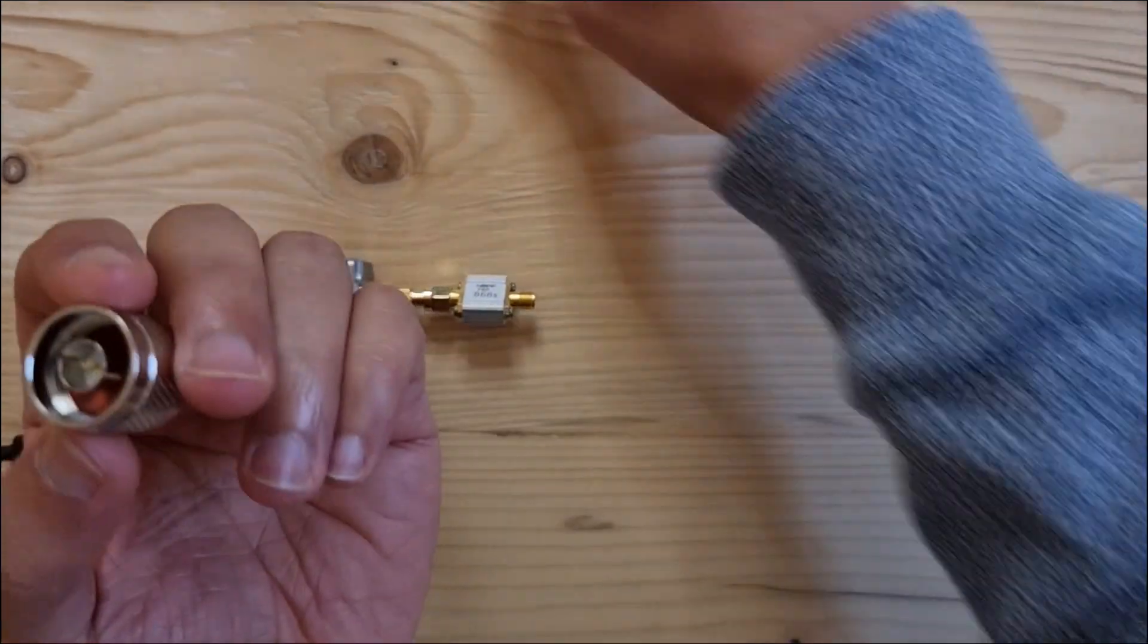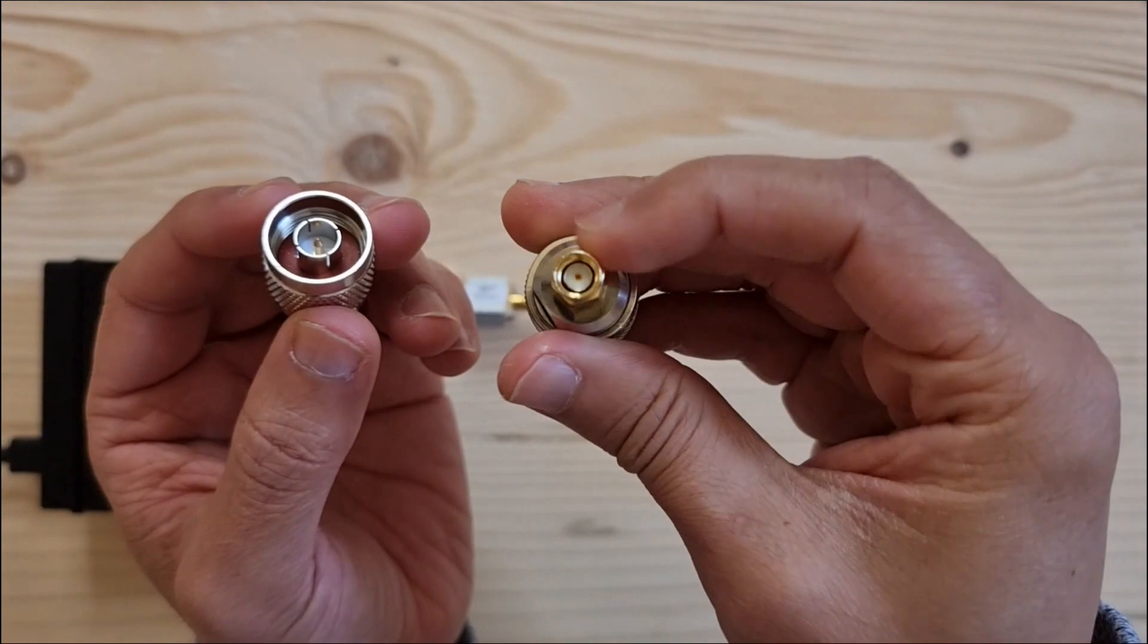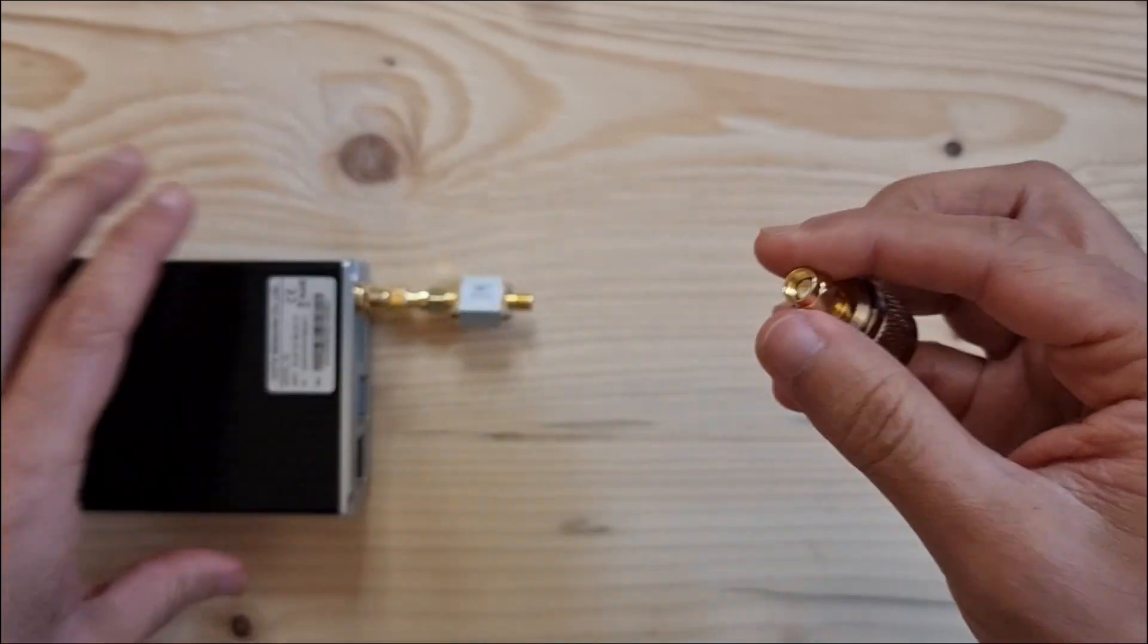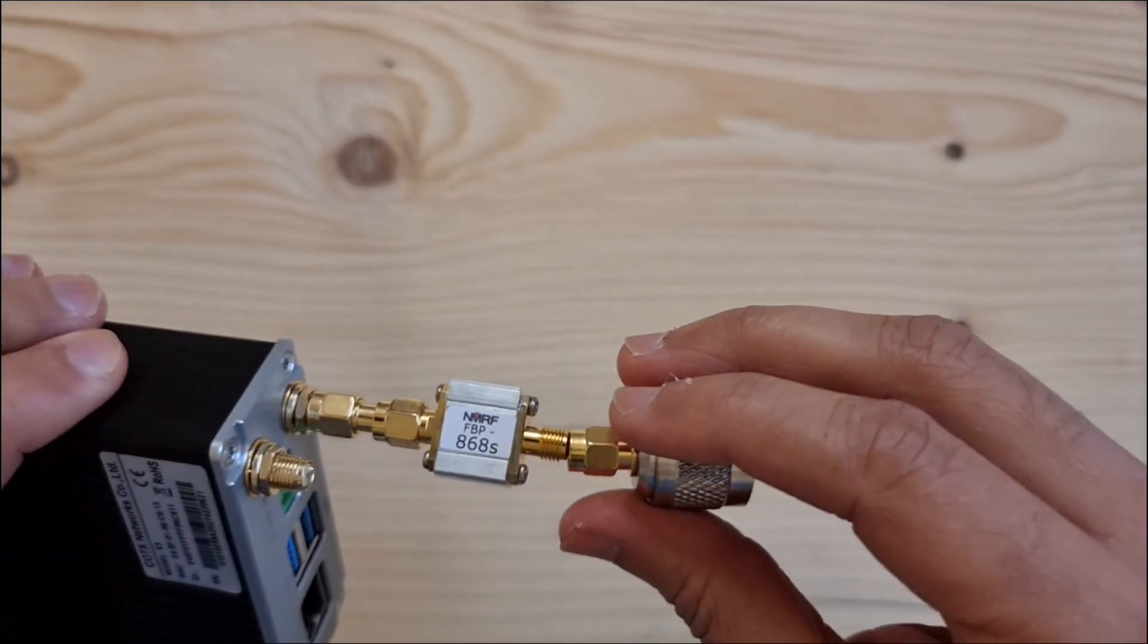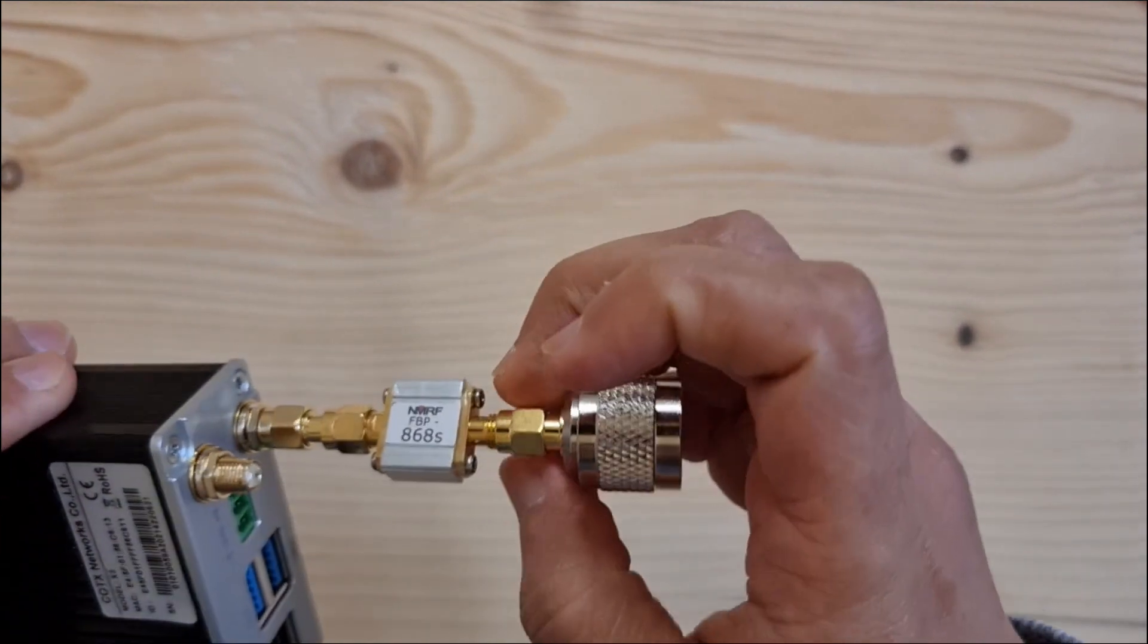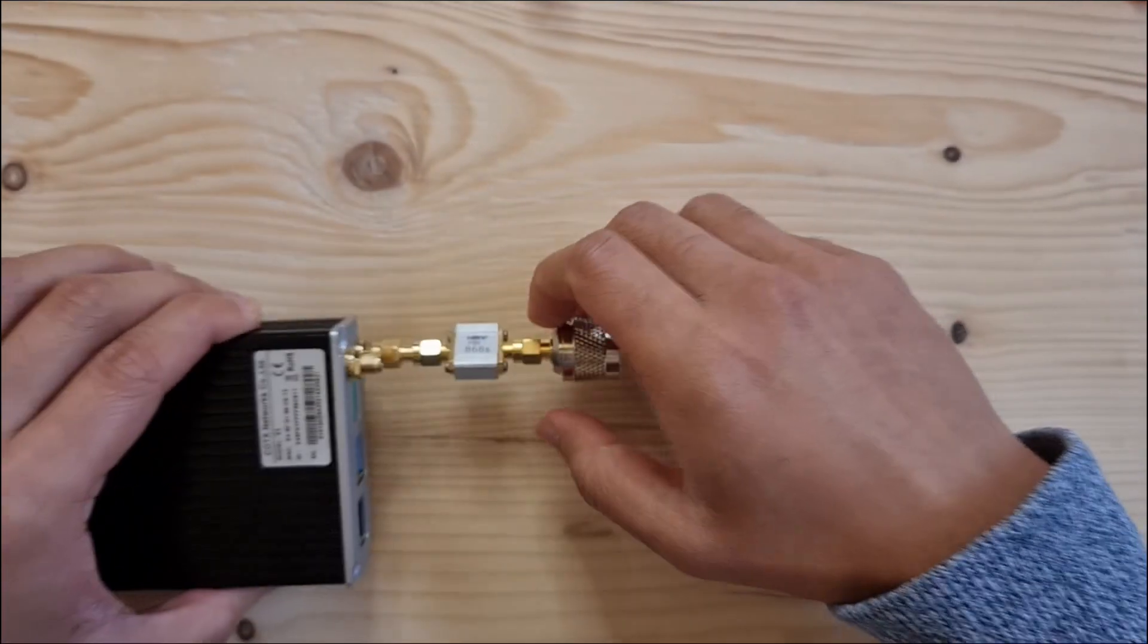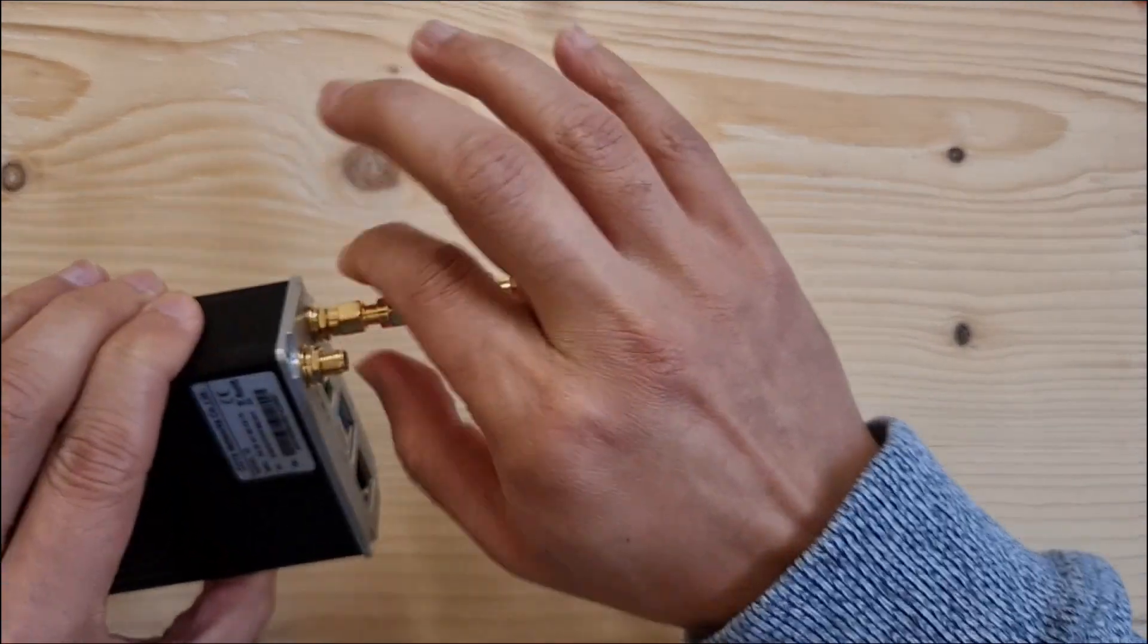So same as the one before you've got N-male, whereas the old one had a RP SMA male this one has just got SMA male and that goes into the SMA female of the AliExpress filter and then all we do is just attach that on nice and tight, everything should be nice and tight.